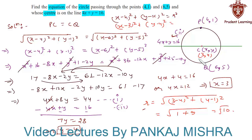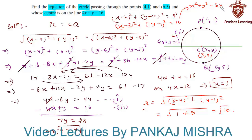Substituting, we get (x minus 3)² plus (y minus 4)² equals 10. If you wish, you can simplify further. On expansion this gives x² plus y² minus 6x minus 8y plus 15 equals 0, which is the general form of the circle. This completes our solution.